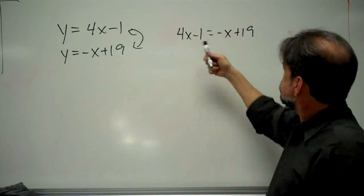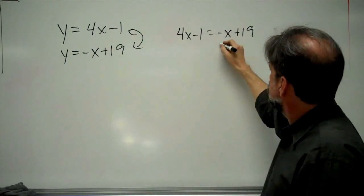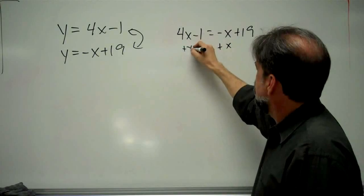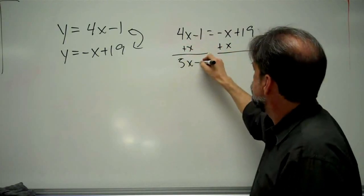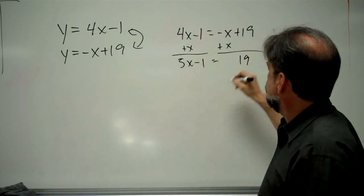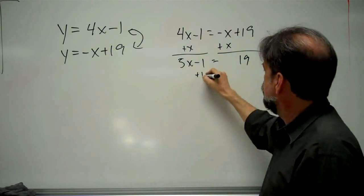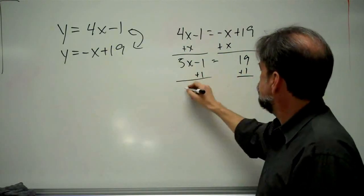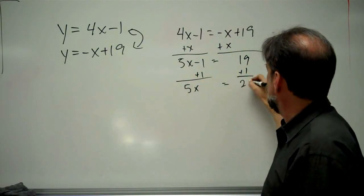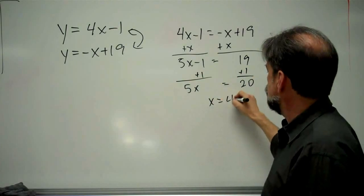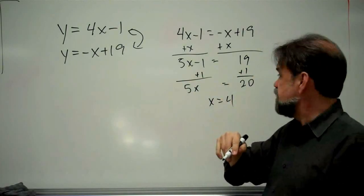Not so hard. Let me add x to this side, add x to this side. And now I've got 5x minus 1 equals 19. I'm going to add 1 to both sides here. And I get 5 times x equals 20, which means x must equal 4. Great. Am I done? No.